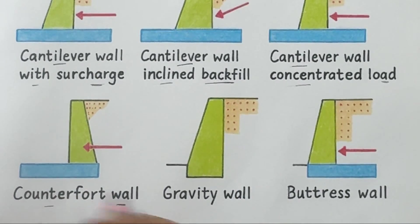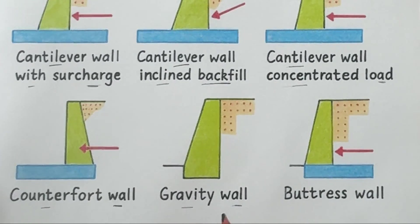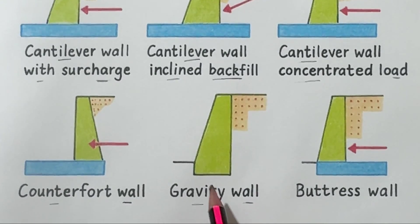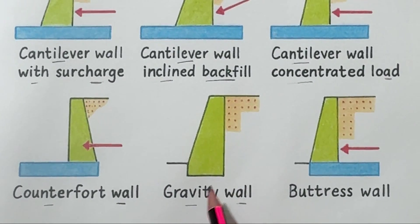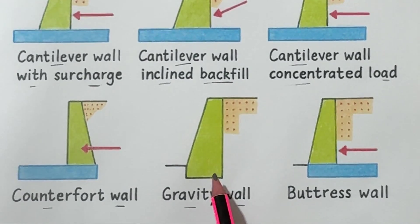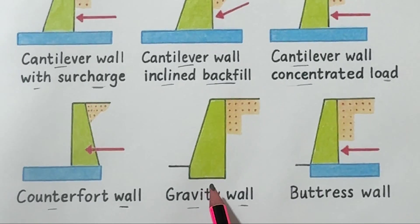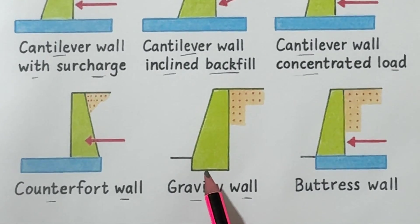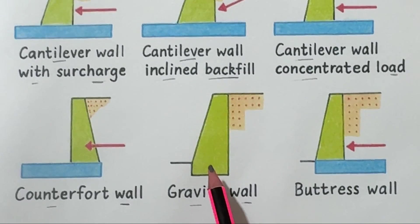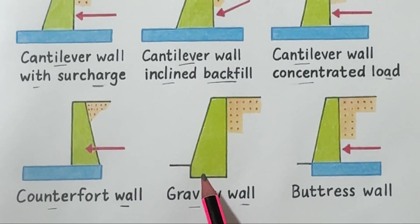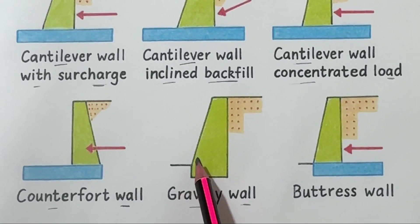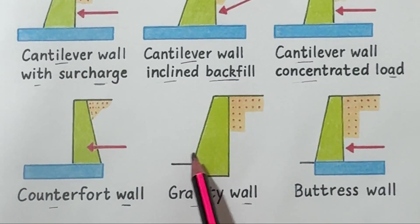Number eight: gravity wall. This one works on a completely different principle. It's made of heavy material like stone, concrete blocks, or mass concrete. It doesn't rely on reinforcement — it resists the earth's pressure just by its own weight. These are simple to build but need a lot of space and materials, so they are used for shorter walls or when stone is easily available.